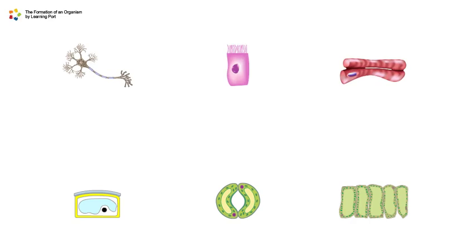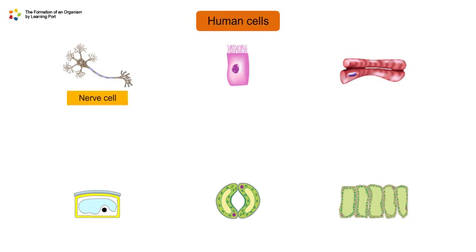Cells are the basic units of life in all organisms. Examples of human cells are nerve cell, epithelium cell, and muscle cell.